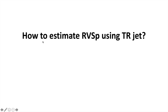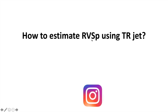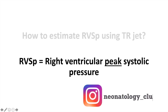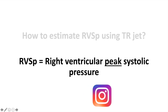Let's get started. Today we're going to talk about how to estimate the RVSP using the TR jet. RVSP stands for right ventricular peak systolic pressure, and this is a marker that we often check in cases of neonatal pulmonary hypertension.